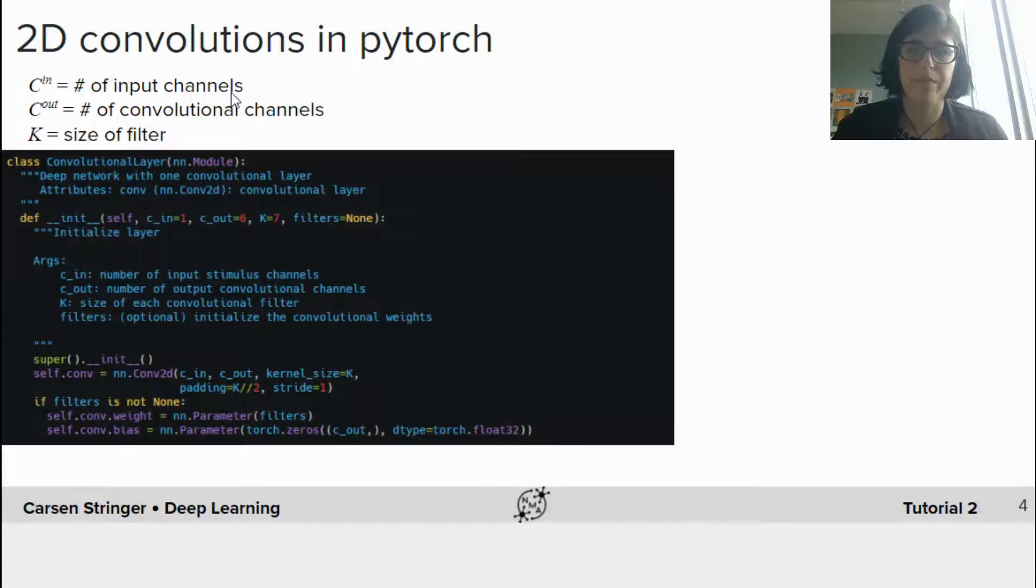All right, so how are we going to implement this in PyTorch? So we're going to create this convolutional layer using nn.module again, like we did in tutorial one. And we're going to create this initialization function, which takes a few different parameters as input versus cin, which is the number of input channels. In this case, that's one because we're using grayscale images of gratings. And in practice, you'll often have three input channels if you're using red, green, blue images, for instance, from the real world.